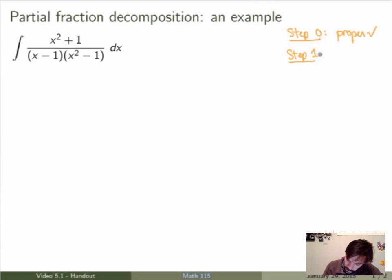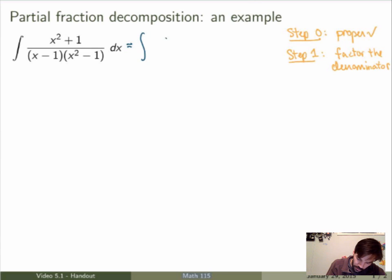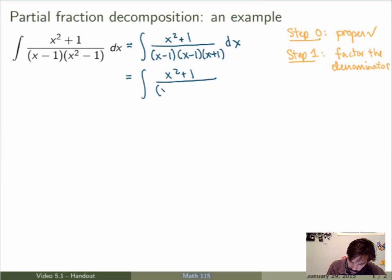Step 1 in partial fraction decomposition is to factor the denominator. We want to rewrite it as a product of linear factors and irreducible quadratic factors. You may think it's already factorized, but x squared minus 1 is not irreducible — it can be rewritten as (x minus 1)(x plus 1). So we rewrite the denominator as (x minus 1)(x minus 1)(x plus 1), and since there are two identical factors, we combine them as (x minus 1) squared times (x plus 1). This is the denominator in factorized form.